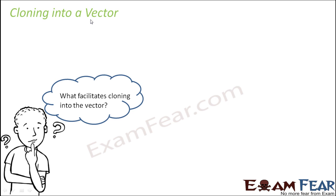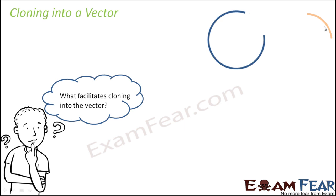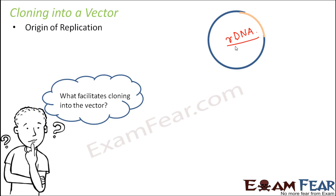Now let us try to understand how cloning exactly happens into a vector — how exactly the foreign gene clones into a vector, and what facilitates the cloning into a vector. This is the cloning vector, and this is the piece of desired DNA which has the gene of interest. We want both of them to combine to form the recombinant DNA. The question is, are there any conditions which need to be present for this combination to take place? That is what we are going to discuss.